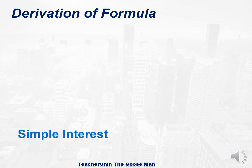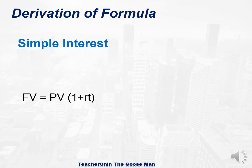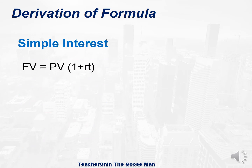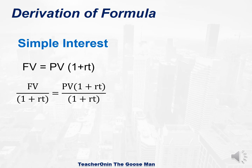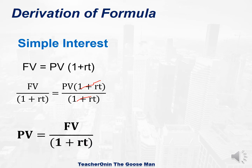Let's recall the formula for simple interest: future value is equal to present value times 1 plus rt. Since we are looking for the present value, I divide both sides of the equation by 1 plus rt, and I can factor out 1 plus rt. Therefore, the present value under simple interest is equal to future value all over 1 plus rt.